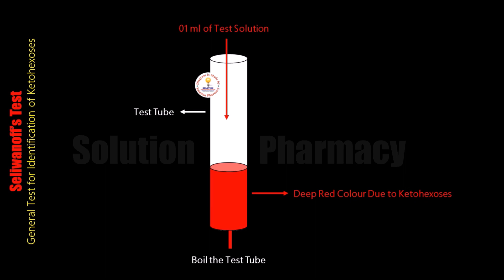So what is the principle of this test? Selivanov's reagent is a mixture of resorcinol and concentrated H₂SO₄ (concentrated sulfuric acid). If keto sugar is present in our test solution, when we add Selivanov's reagent, the concentrated sulfuric acid present in the reagent dehydrates the keto sugar. After this dehydration, the keto sugar converts into a furfural derivative within a few minutes, much faster compared to aldoses.